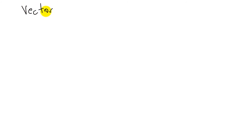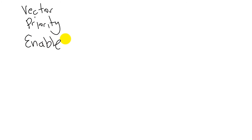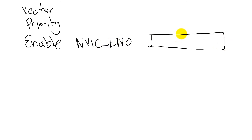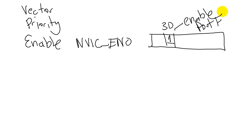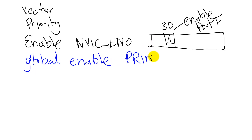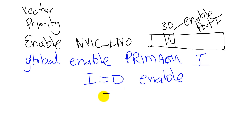Next we have to look at enables for this interrupt. There are two enables. The first is a specific enable in the nested vectored interrupt controller, enable register zero — bit 30 must be set to one to enable the Port F interrupts. The second is a global interrupt enable in the Primask register in the processor: the I-bit must be zero to enable all interrupts; if it is one, that means disable.